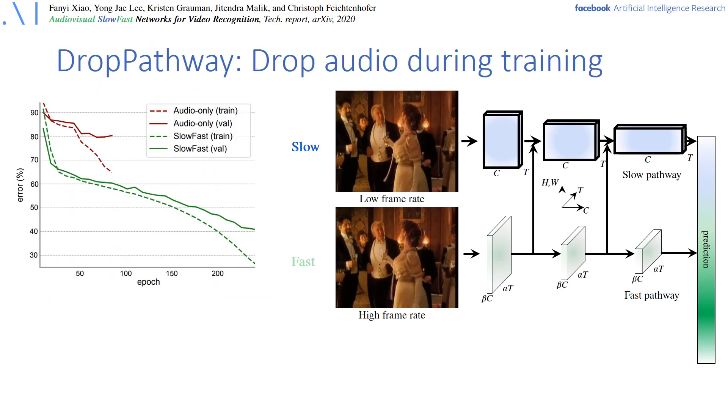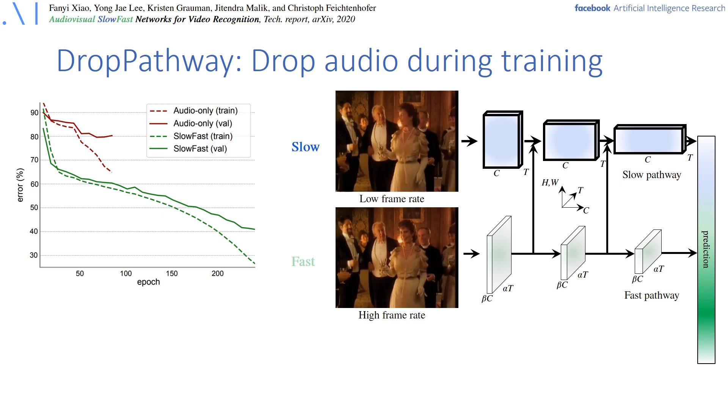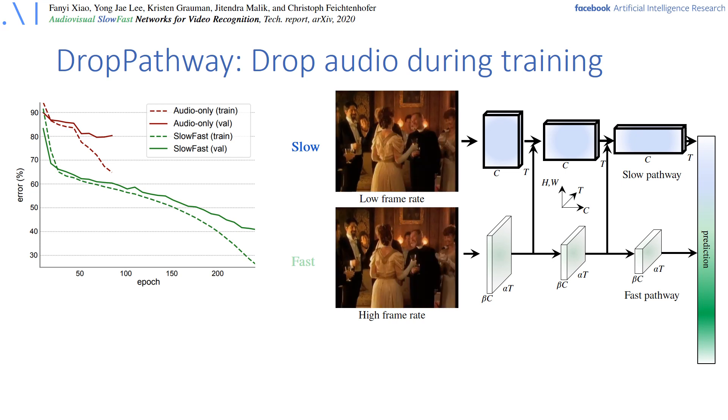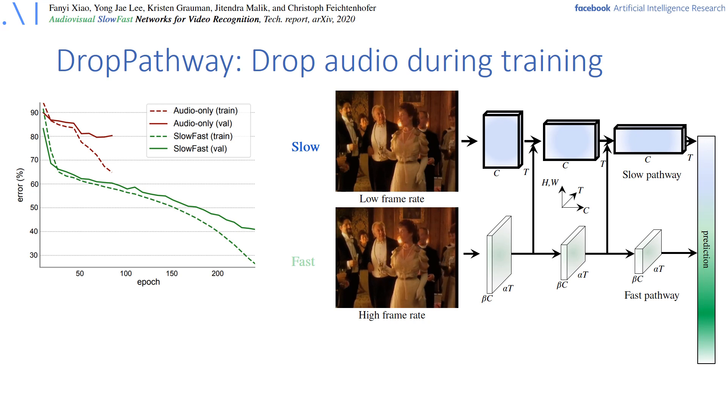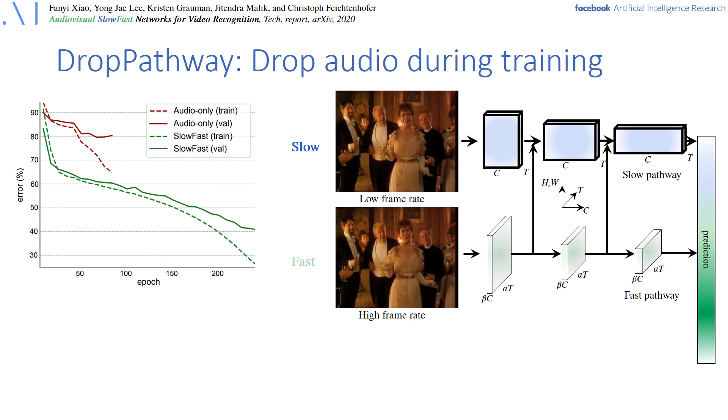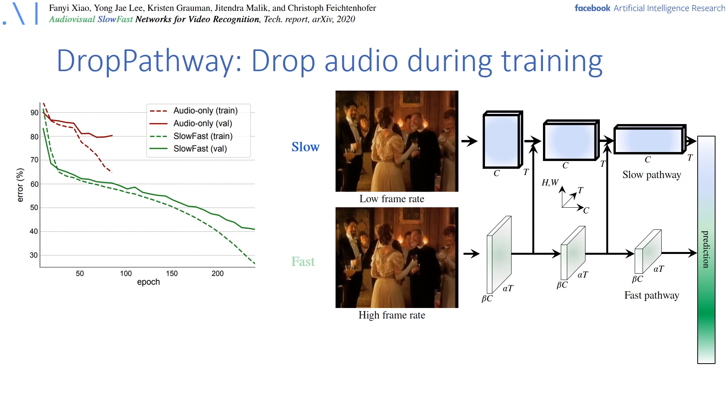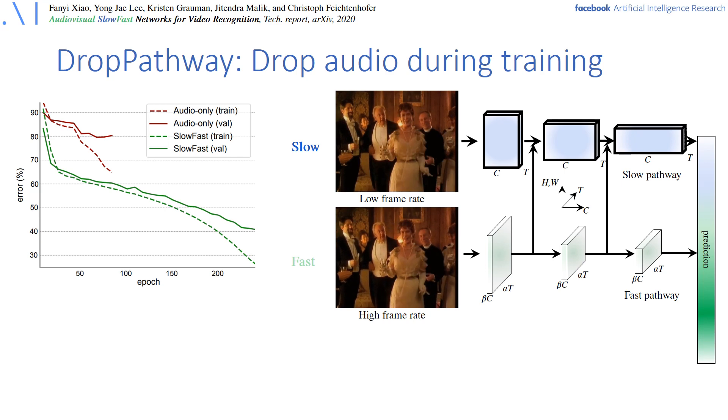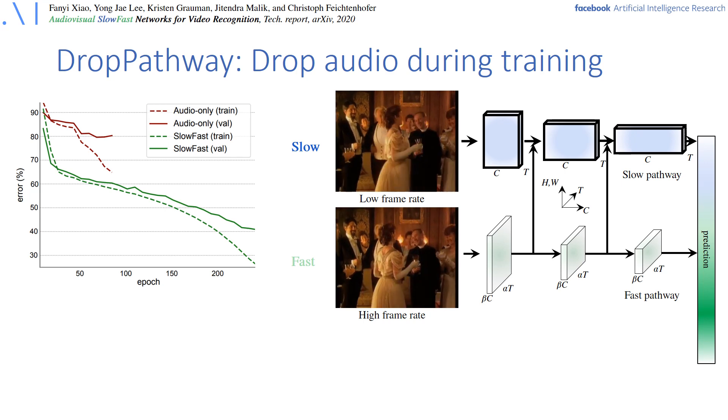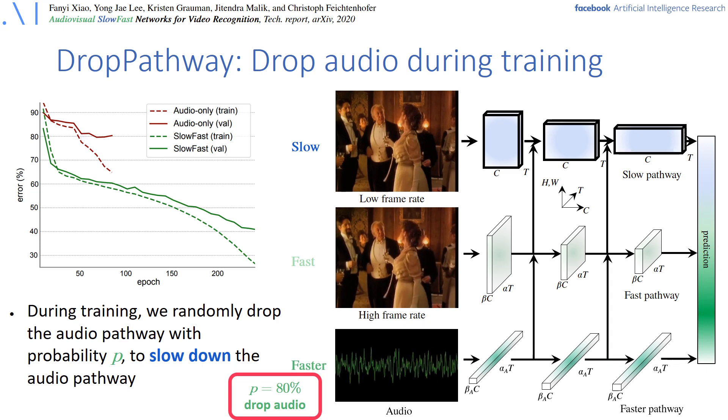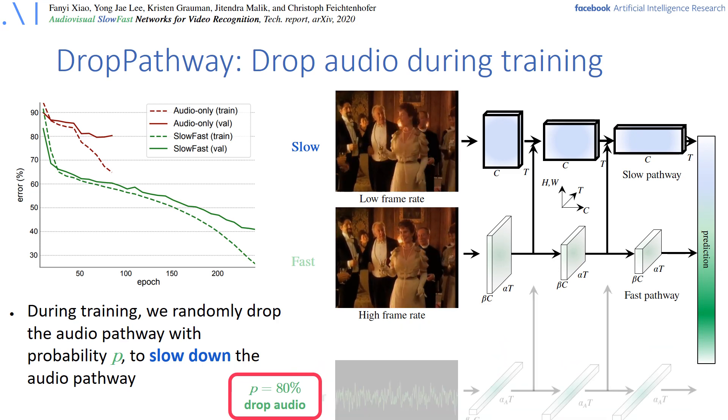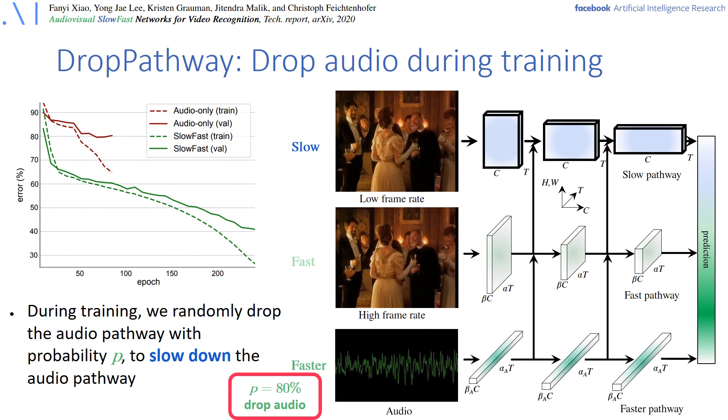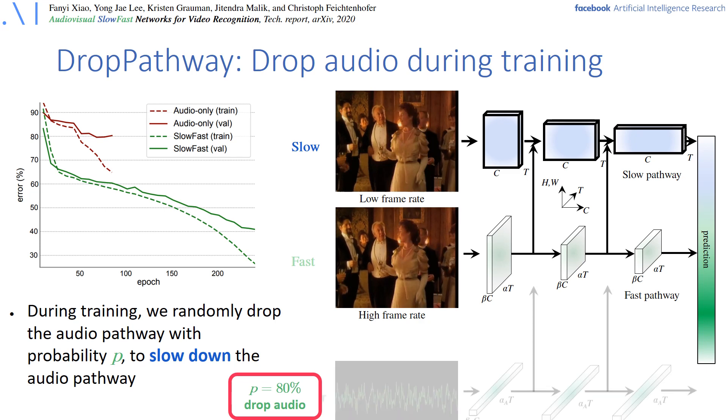However, if one tries naive joint training of audio and visual modalities, it will not work and provide an even lower performance than a visual-only SlowFast model. This can be explained if we see the training dynamics shown on the top left curves. We see that audio alone in red needs much fewer iterations to converge and then starts to overfit. To overcome these different learning dynamics, what we do in the paper is we use drop pathway that randomly drops the audio pathway during training, which enables us to train an audiovisual model jointly with hierarchical fusion connections between the modalities.